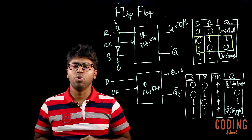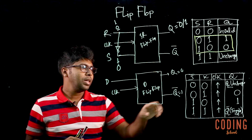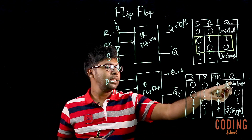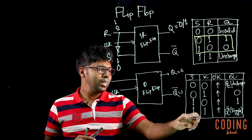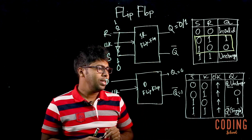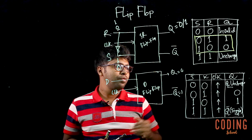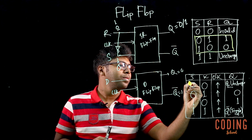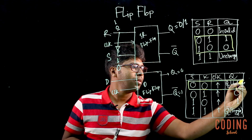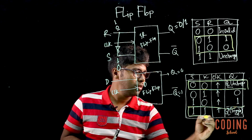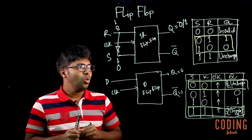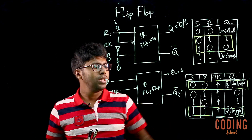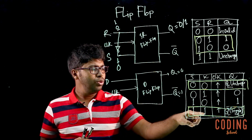The T flip-flop is called the toggle flip-flop. When the input is 0, the output does not change, and when the input is 1, the output toggles with the clock. We can implement the T flip-flop using a JK flip-flop. If you want to change the shape value, you will have a toggle.